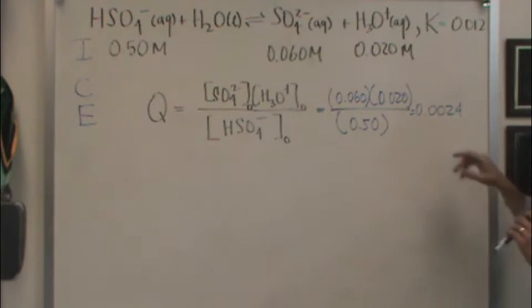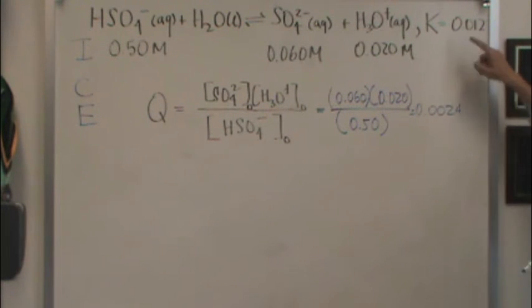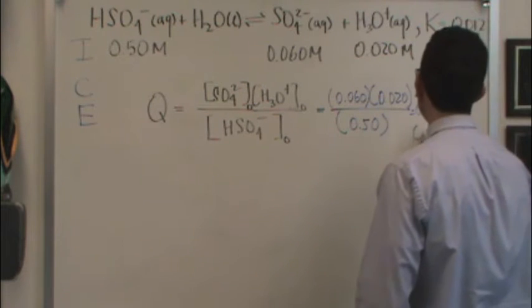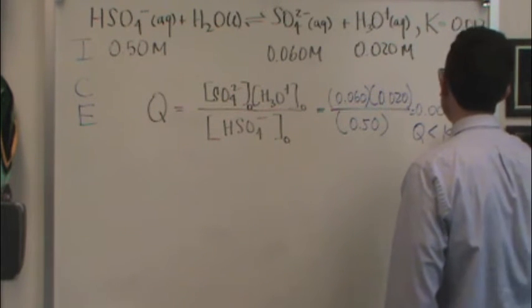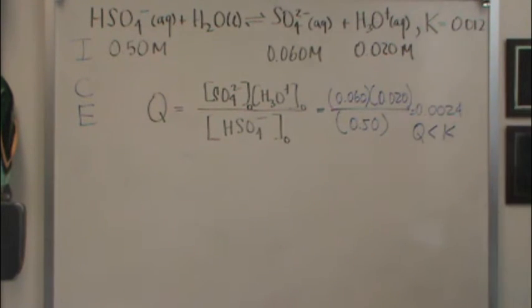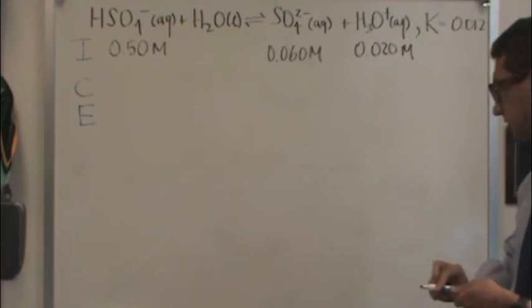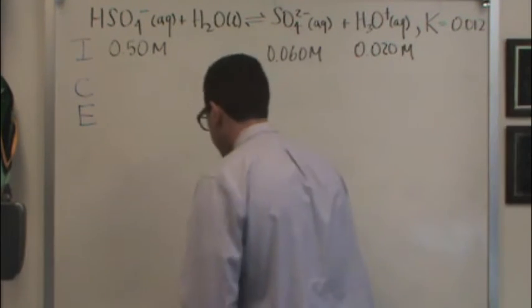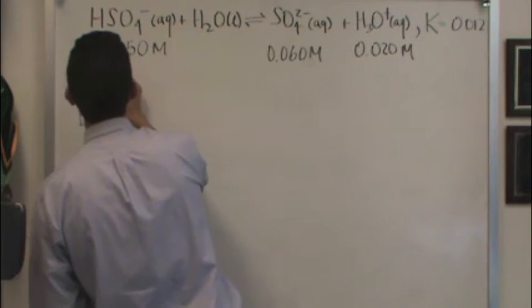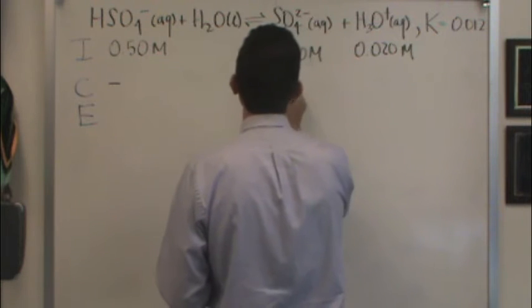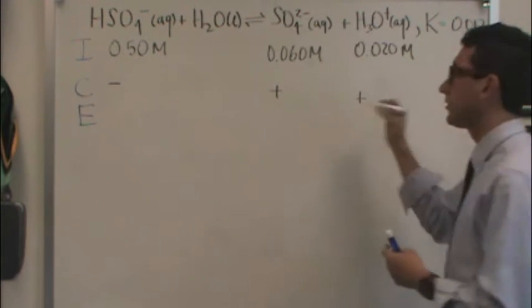So if Q is 0.0024, you can see that Q is less than K. So in this case it has to shift to the right. And so in our case, we're going to shift to the right. That means we're going to have a minus there and plus plus here on the product side.